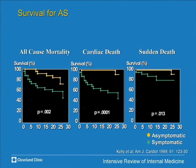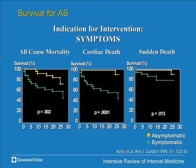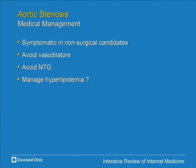Once symptoms develop, survival markedly worsens. Medical management offers little to prevent AS progression except managing hyperlipidemia. Avoid severe vasodilators — nitroglycerin can precipitate syncope by reducing preload. ACE inhibitors, if already tolerated, don't necessarily need to be stopped. The PARTNER trial showed significantly better outcomes with percutaneous valve replacement versus medical therapy in inoperable elderly patients (mean age 83), published in the New England Journal. This is likely to be a sea change in managing very ill or high surgical-risk patients.